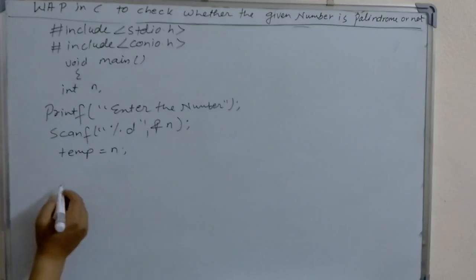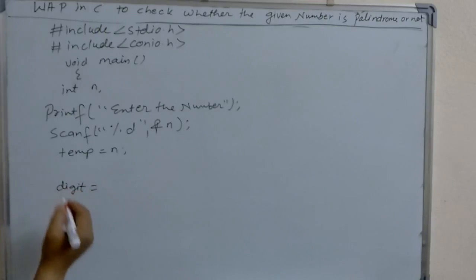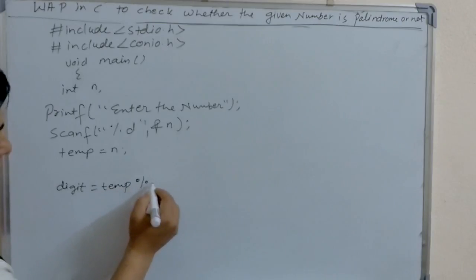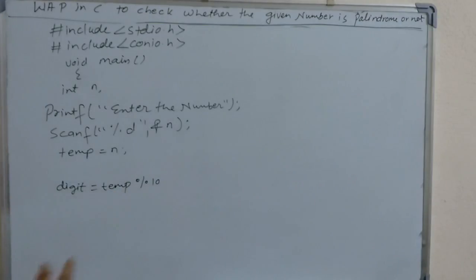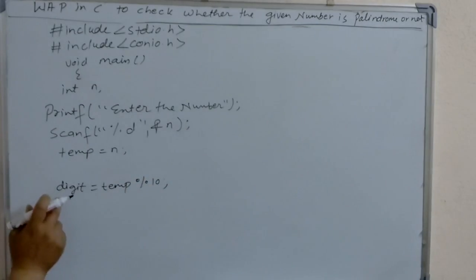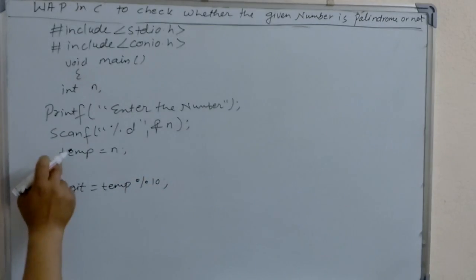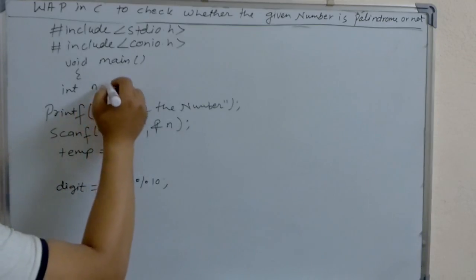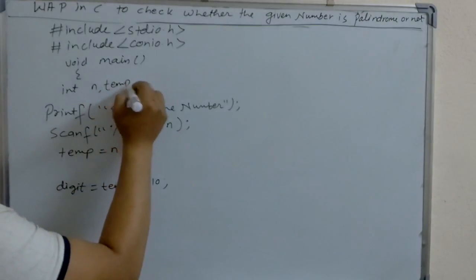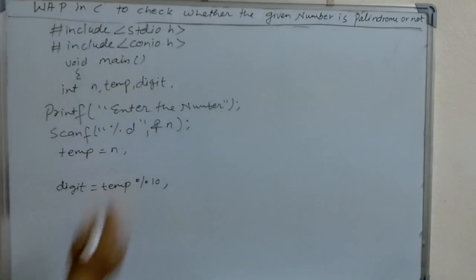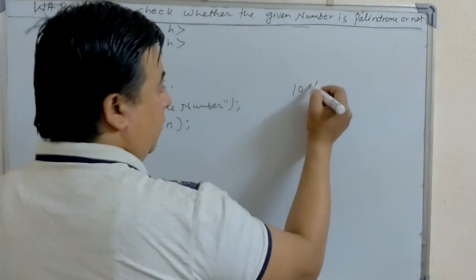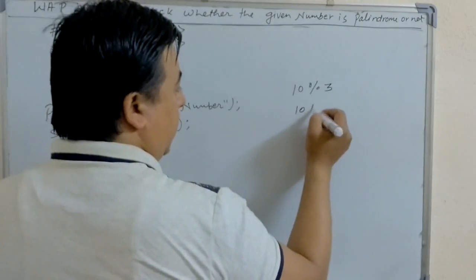Now let's write: digit = temp % 10. This digit and temp are not declared yet, so you will get an error — declare them first as integer variables. To understand the modulo and division: 10 % 3 means it takes the remainder, and 10 / 3 means it takes the quotient. So 3 times 3 is 9, remainder is 1 — the remainder 1 is held by the modulo operator, and the quotient 3 is held by the division operator.